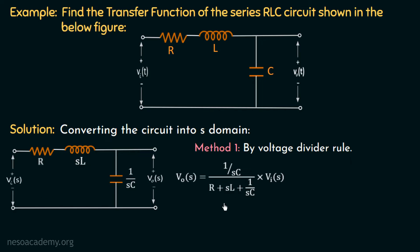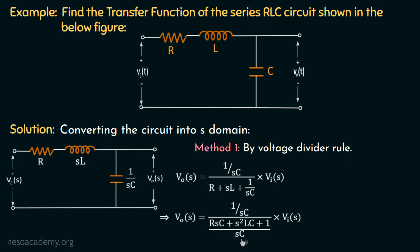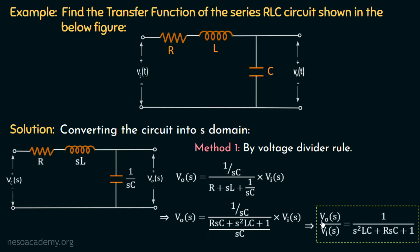Now if we take the LCM in the denominator, we will have Vout equal to 1 over SC, over RSC plus S squared multiplied with LC plus 1 over SC, multiplied with Vi. We can see that the 1 over SC term in the numerator and denominator will get cancelled, and we will have the overall transfer function Vout(S) over Vi(S) equal to 1 over S squared multiplied with LC plus RSC plus 1. This is the overall transfer function of the series RLC circuit, calculated using the voltage divider rule.